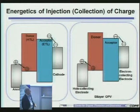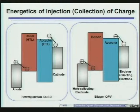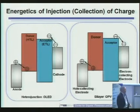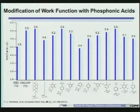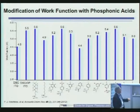In some optoelectronic devices you either have to worry about injecting charges or collecting charges. In order to do that you may want the Fermi level of your electrodes to be aligned with the relevant ionization potentials of your donor or acceptor layers. Phosphonic acids provide a very simple way to tune the work function over a relatively broad range — over a volt — pretty easily with these simple phosphonic acids.